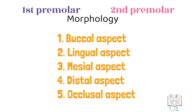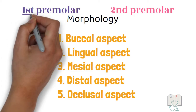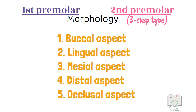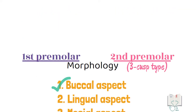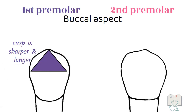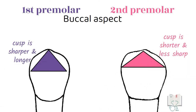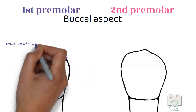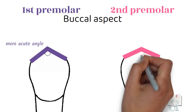We will now study the morphological differences between the two teeth, focusing on differences between the first premolar and the second premolar of the three-cusp type only, as it is the more common variety. Starting with the buccal aspect: the outline form of both premolars is trapezoidal. The buccal cusp of the first premolar is sharper and longer than that of the second premolar, which is short and less sharp, because the cuspal ridges meet at a more acute angle in the first premolar.